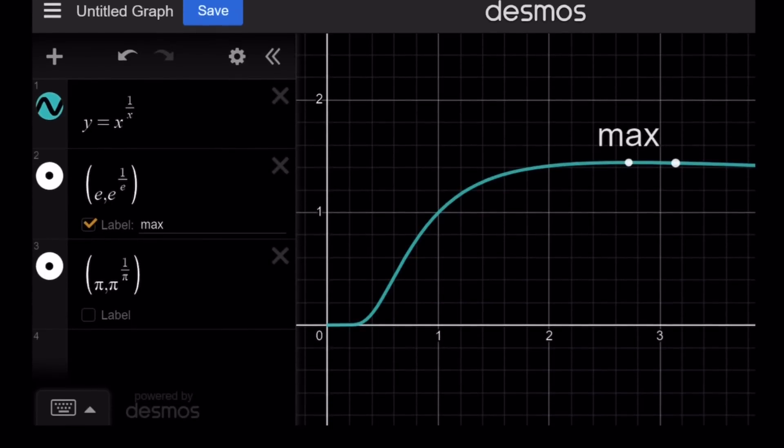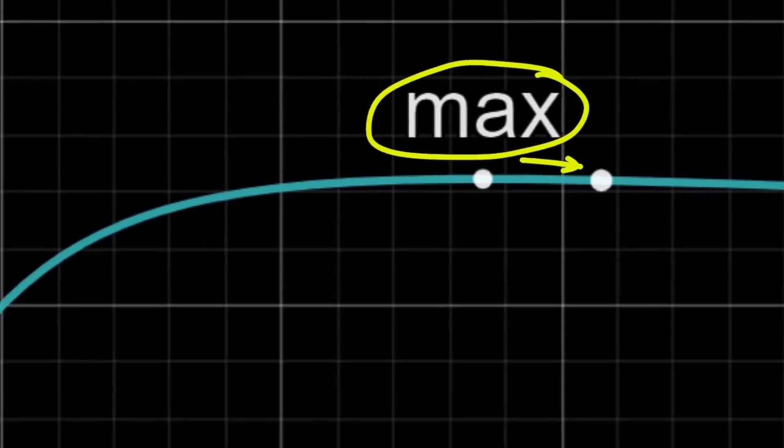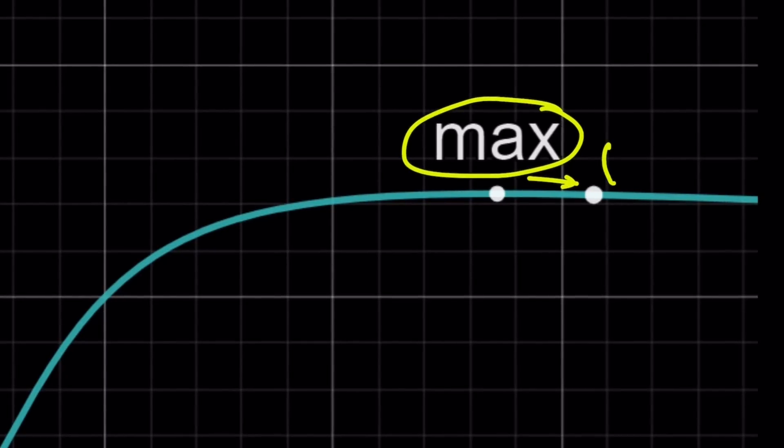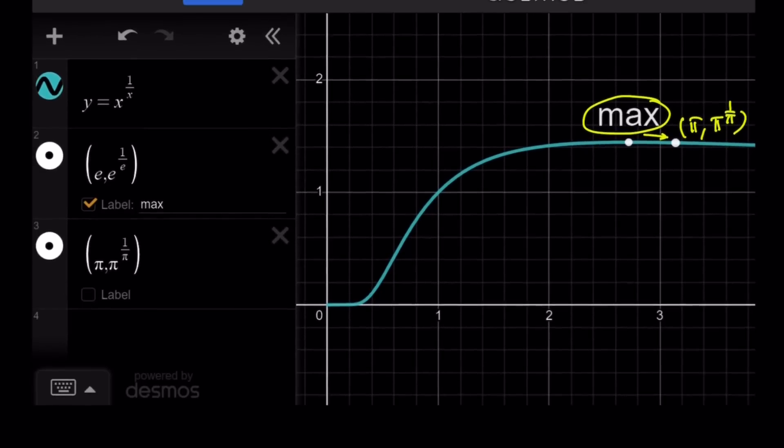Let's go ahead and look at the graph real quick. As I told you earlier, at e, we have our maximum point. It's kind of hard to see here. Maybe I can zoom out a little bit. It's kind of dropping here, and as you can see, this is basically π, π to the power 1 over π, and that's going to be less than e to the power 1 over e. Make sense?